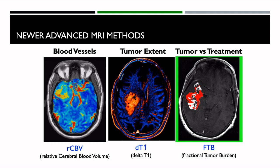In summary, the methods I have demonstrated are very well understood, validated technologies: the relative cerebral blood volume to give us maps of blood vessels throughout the brain; the tumor extent from Delta T1 to give us true enhancing lesions; and our fractional tumor burden maps that can make the distinction between what's tumor and what's treatment effect. We have great hope for these biomarkers to really shift the paradigm in the treatment management of patients.